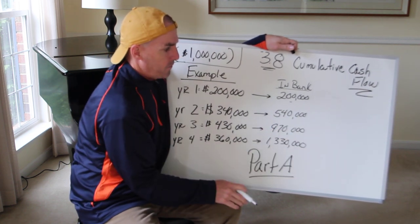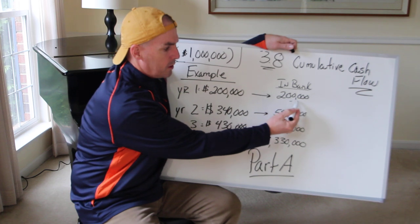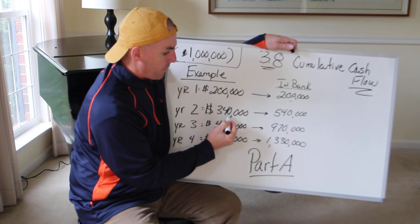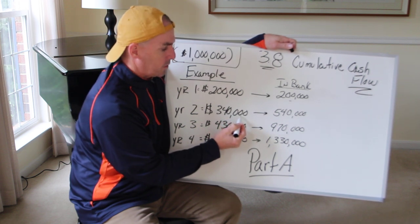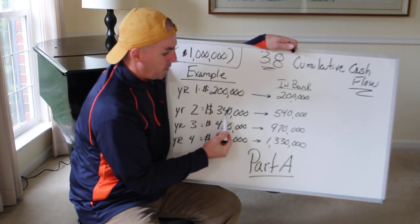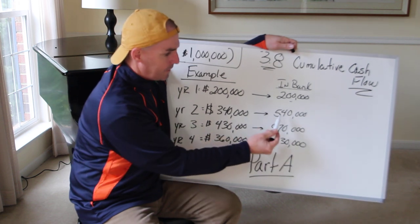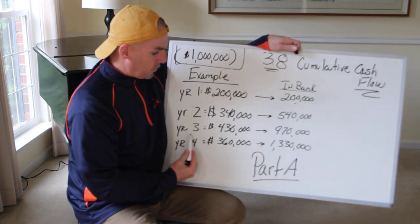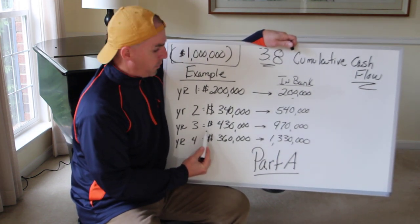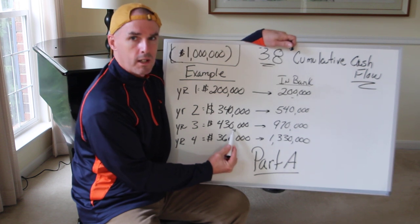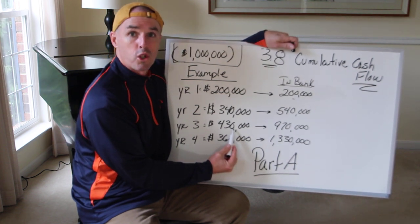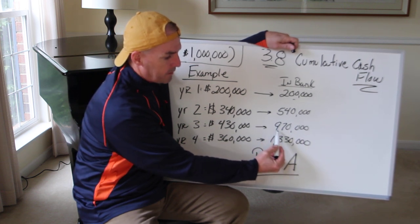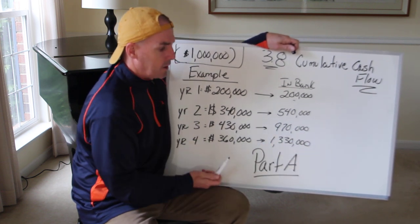Now I have $540,000 in the bank. And how do you get this? After year one, you have $200,000 in the bank. Now you have year two, you have $340,000. $200,000 plus $340,000 equals $540,000. At the end of year three, I bring in a whopping $430,000 to the Buffalo Bills because I'm so good.